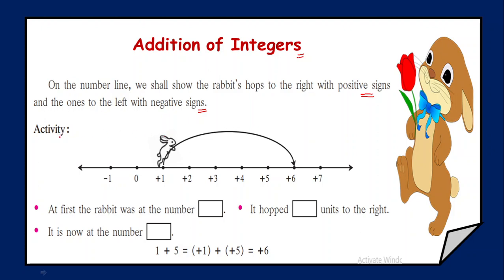Now let's see an activity. Here initially the rabbit was at the position plus 1. Now he hopped by 5 units and he is hopping towards the right, so we are going to consider it with positive sign — that is plus 5 units. Then after hopping towards the right, he has reached the position plus 6. So how we will add this? He was initially at the position plus 1, then he shifted towards the right, so plus 5. When you add plus 1 and plus 5, you are going to get plus 6.